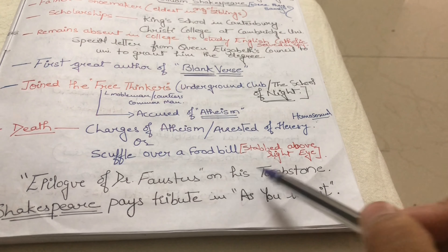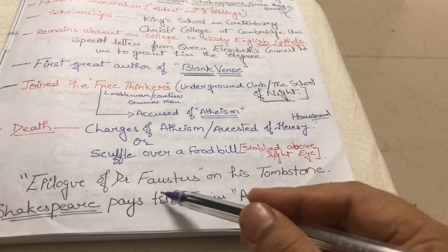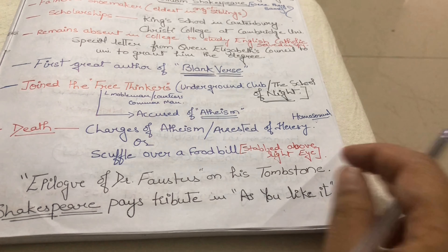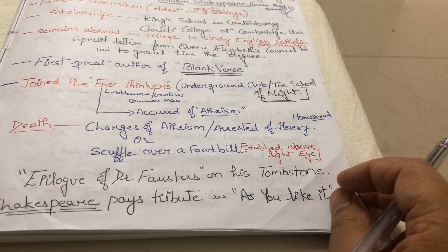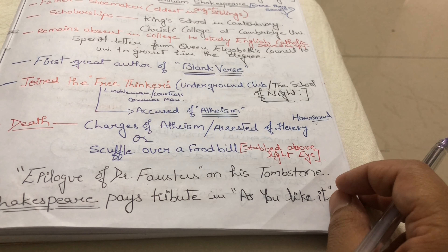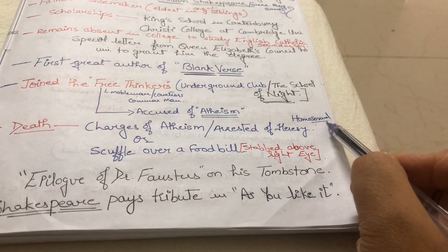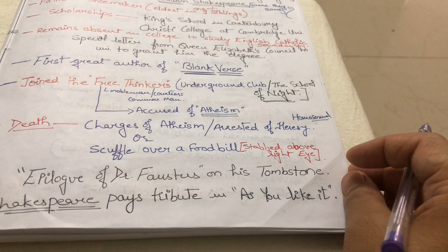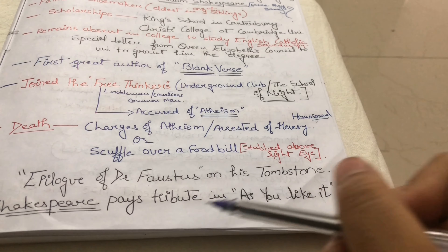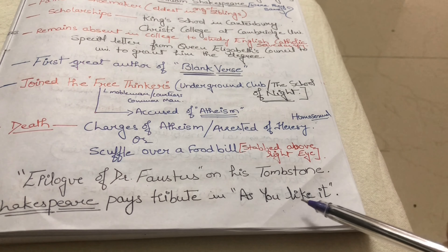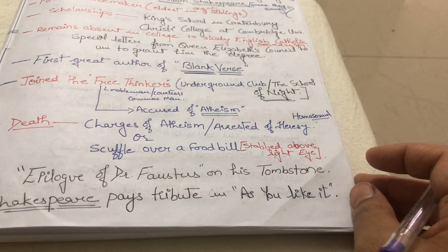The epilogue of Doctor Faustus is written on Marlowe's tombstone. One important thing to remember is that Christopher Marlowe's work almost all has a homosexual feature. He was accused of homosexuality and this feature appears in many of his works. Shakespeare paid tribute to him in As You Like It, and Ben Jonson said that Christopher Marlowe wrote mighty lines.